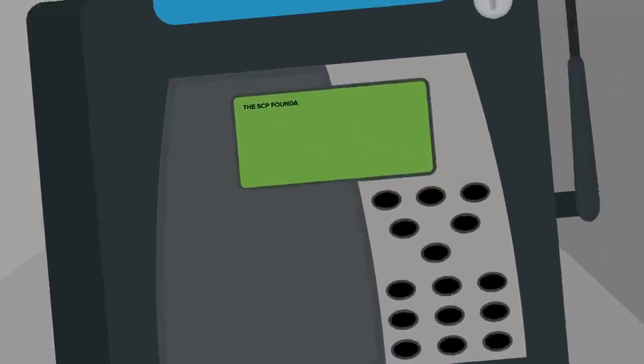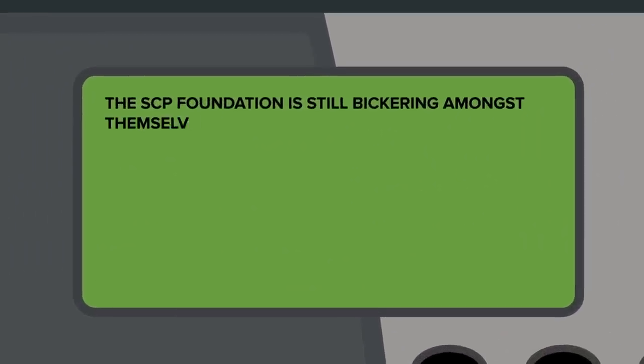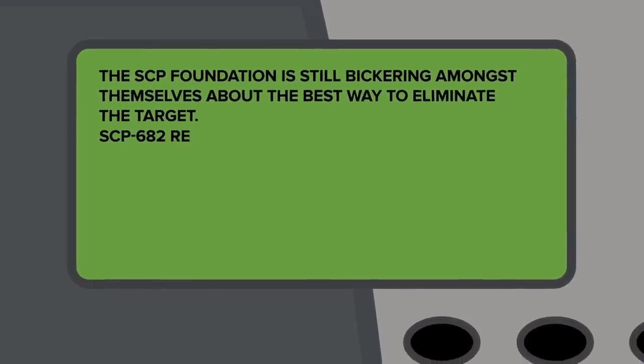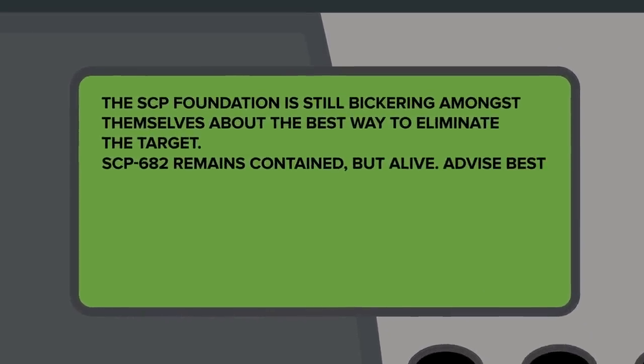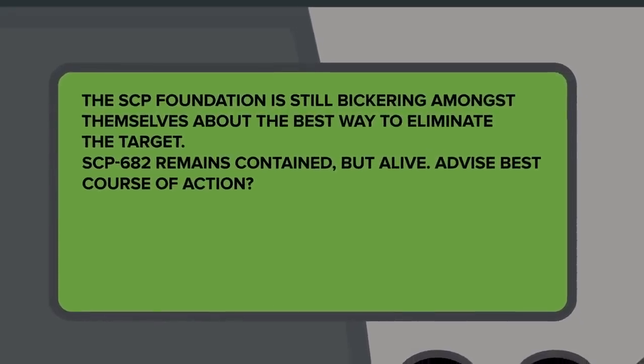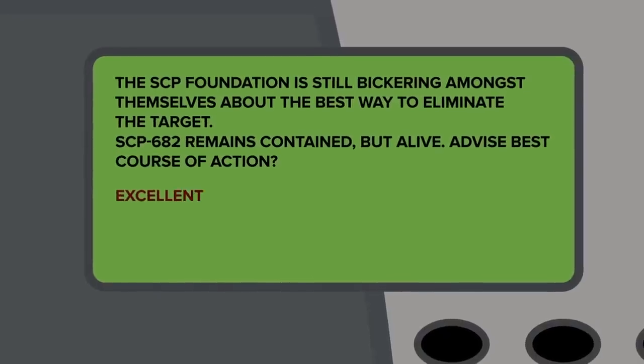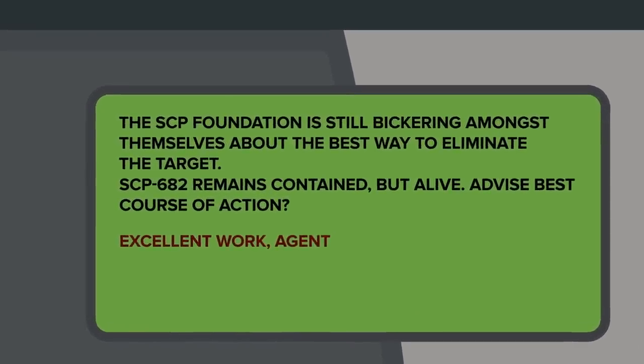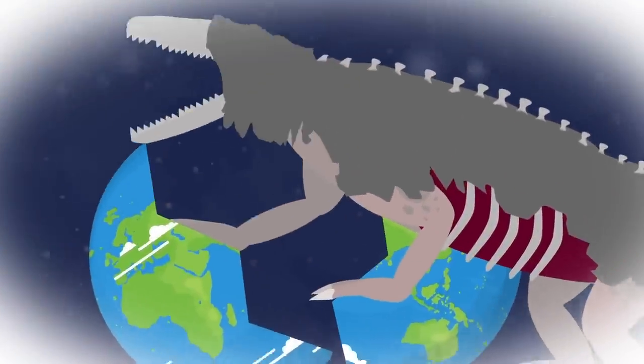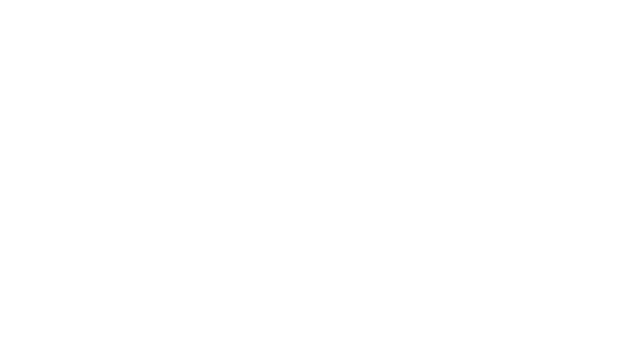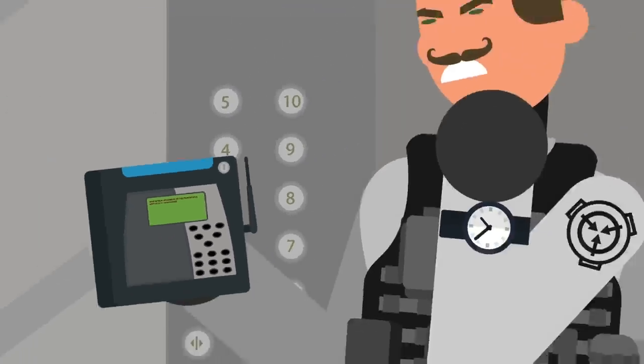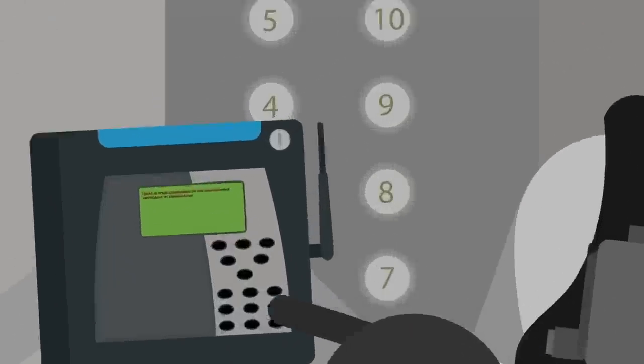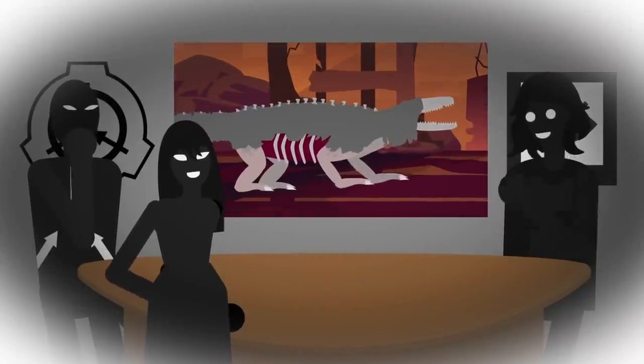Agent Parados checking in, he wrote. The SCP Foundation is still bickering amongst themselves about the best way to eliminate the target. SCP-682 remains contained but alive. Advise best course of action. The cursor on screen blinked for a few seconds, awaiting a response. Excellent work, Agent. The reply from GOC command finally arrived, lines of text scrolling rapidly across the screen. As long as this anomaly is allowed to live, it poses an ever-present threat to all life on Earth. What is your assessment of the Foundation's approach to termination? Parados thought to himself for a moment before sending back, they're overthinking it. Affirmative, the Coalition wrote.